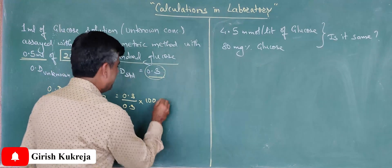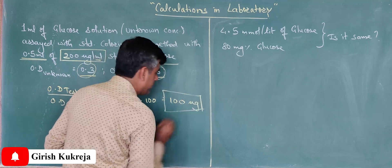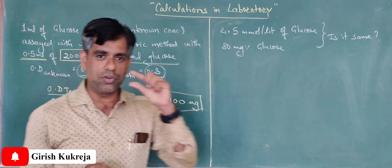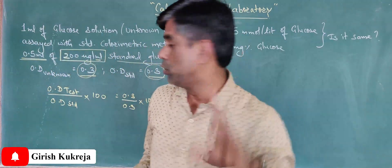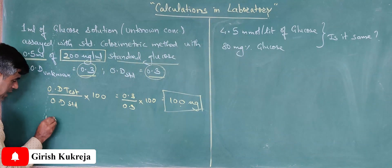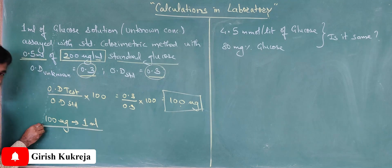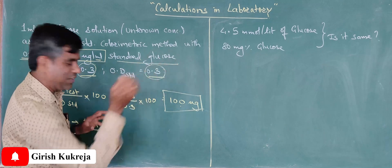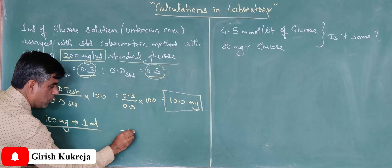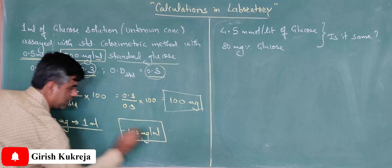So here I will get 0.3 upon 0.3 into 100—a very difficult calculation! Anyway, this gives me around 100 micrograms. So my unknown glucose solution contains 100 micrograms. Now these 100 micrograms are present in 1 ml of it, because my 1 ml gave that particular OD. So my concentration of unknown would be 100 micrograms per ml.